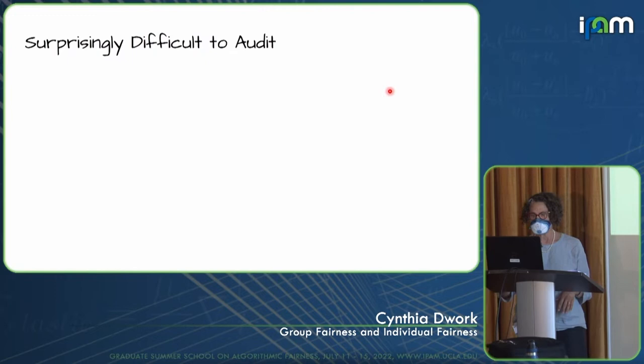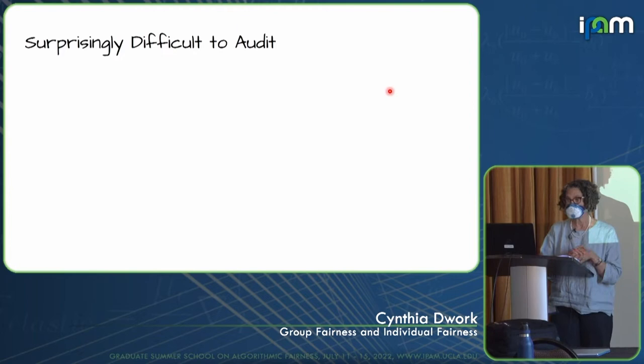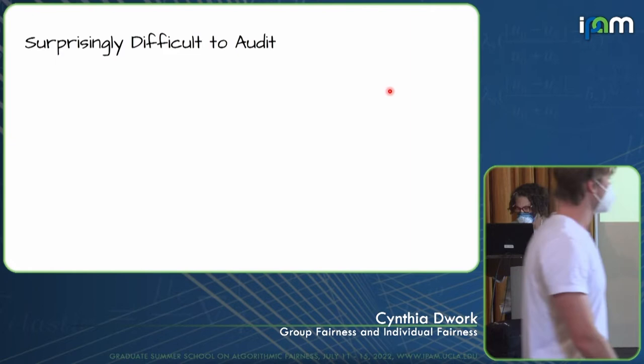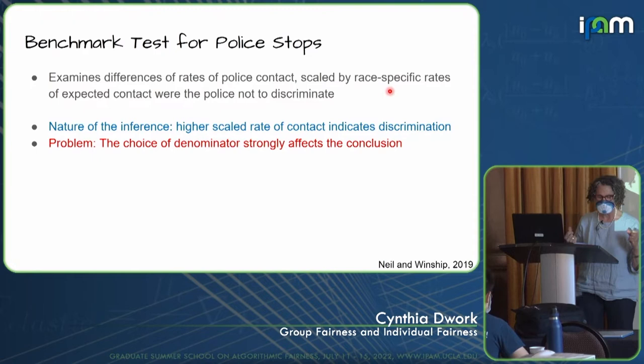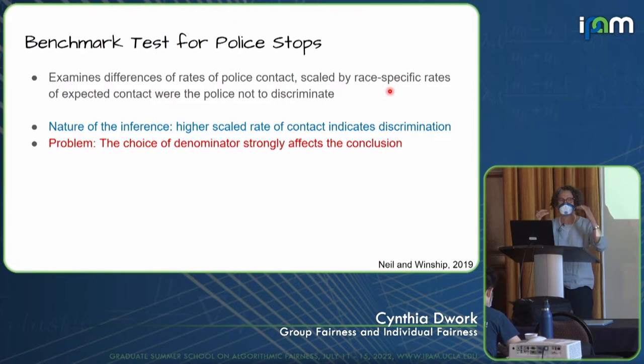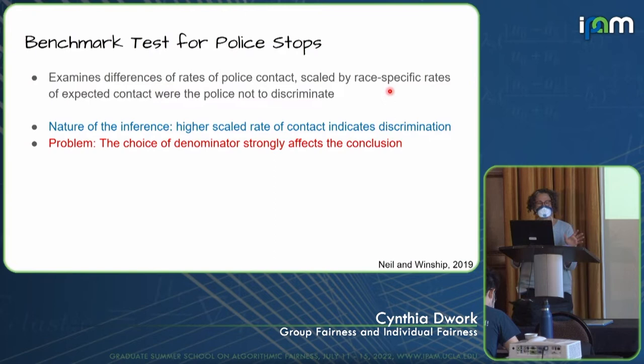I want to say a few words about auditing. Auditing is going to come up crucially later, but I want to look at a particular kind of auditing which is absolutely part of real life. I'm talking about an article by Neal and Winship, published in a journal from the American Association of Criminologists. They examined so-called benchmark tests — examining differences of rates of police contact scaled by race-specific rates of expected contact were the police not to discriminate.